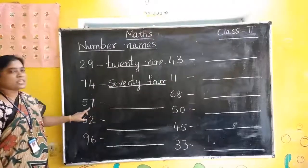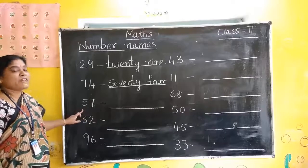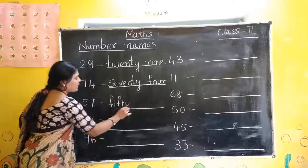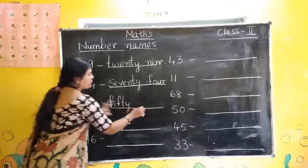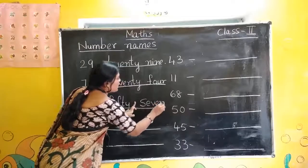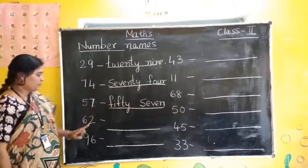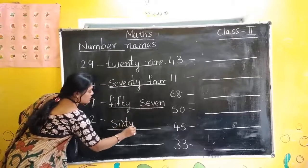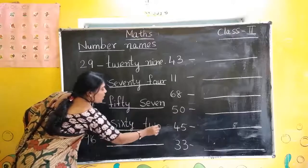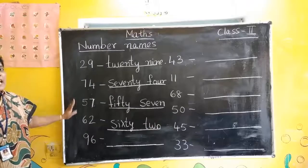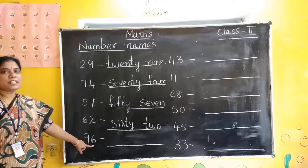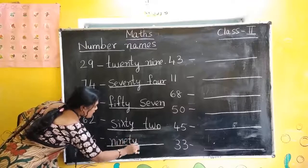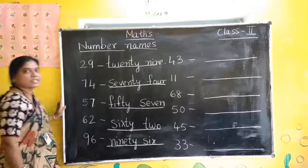What is this number? 5, 7 — 57. 50: F-I-F-T-Y, and 7: S-E-V-E-N. 57 — fifty-seven. 62: S-I-X-T-Y, sixty, and T-W-O, two. You have to read and write. 9, 6 — 96. 90: N-I-N-E-T-Y, and 6: S-I-X. 96 — ninety-six.